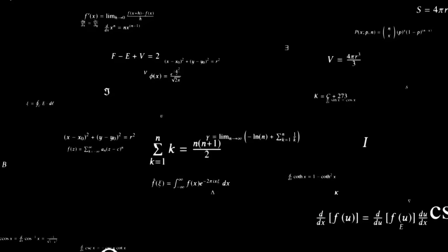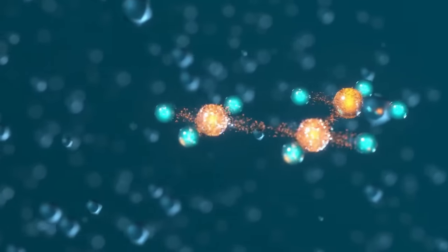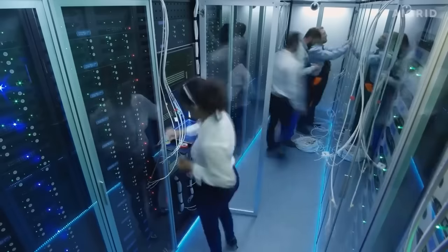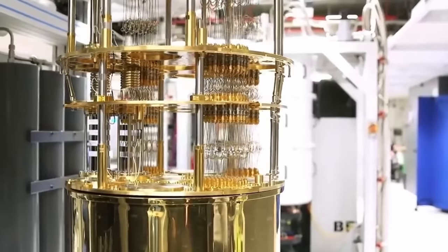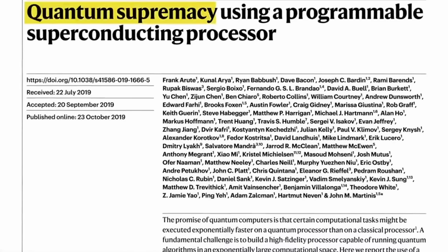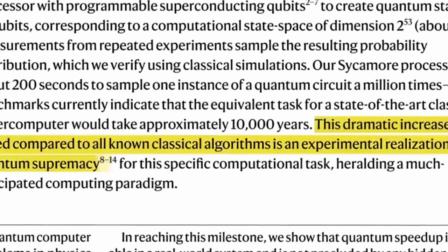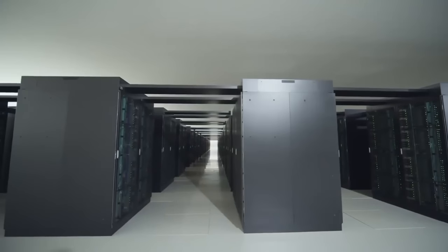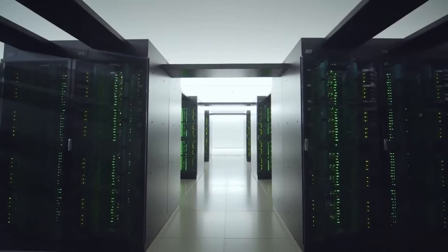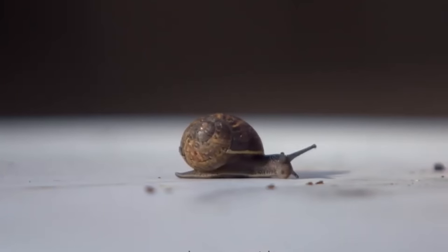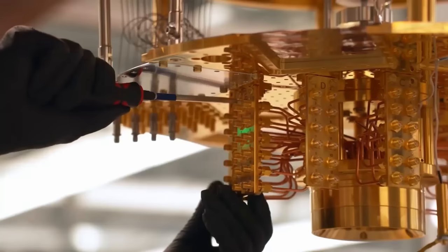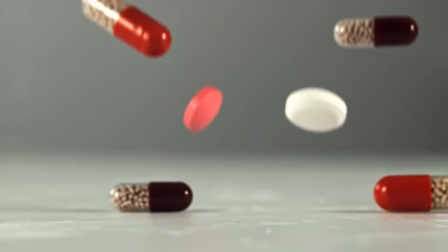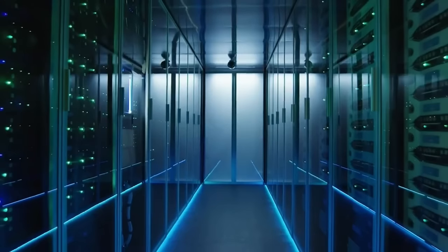Picture the most complex mathematical problems, or simulations of molecular interactions for drug discovery, or even predictions about global climate changes. These tasks, which could take classical computers millions of years to complete, could potentially be solved by quantum computers in near seconds. A case in point is Google's quantum supremacy experiment in 2019. Google's 54-qubit quantum computer, Sycamore, accomplished a task in just 200 seconds — a task that the world's fastest classical supercomputer would take approximately 10,000 years to complete. That's like comparing the speed of a snail to the speed of light. But it's not just about speed. Quantum computers can help us develop new materials and medicines by accurately simulating their behavior at a molecular level, a feat impossible for classical computers.